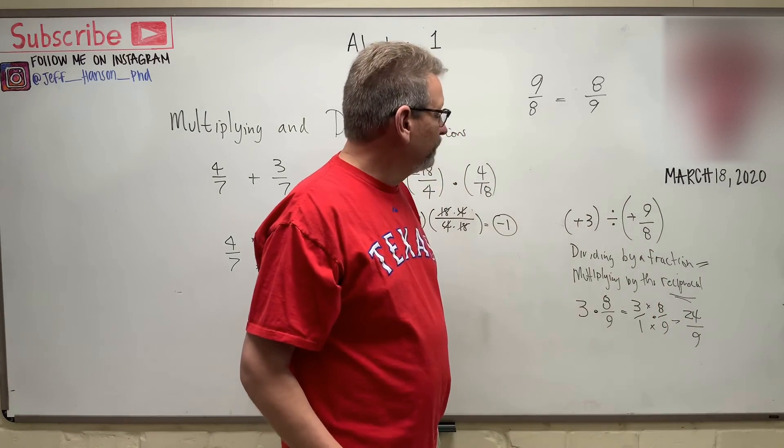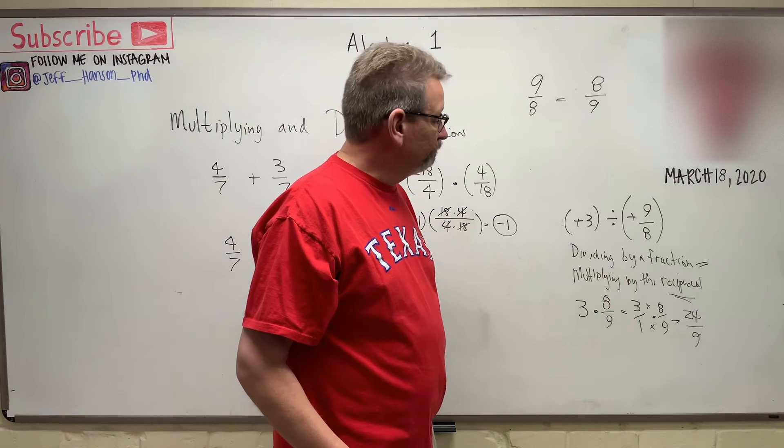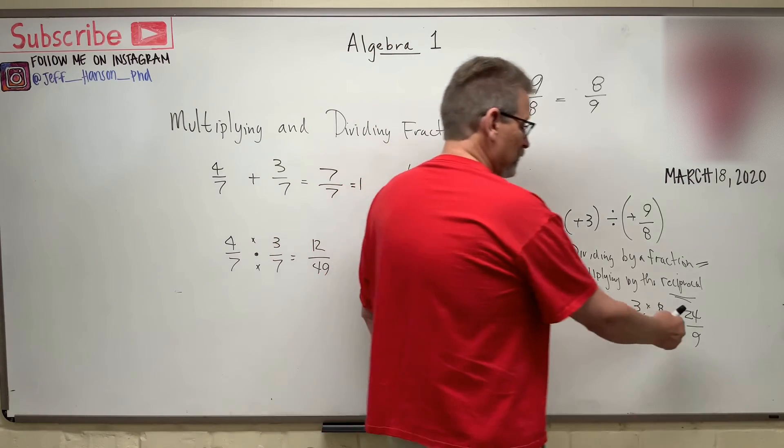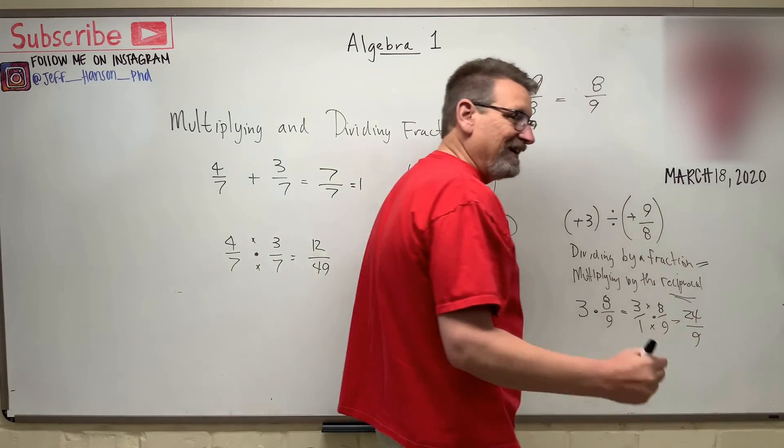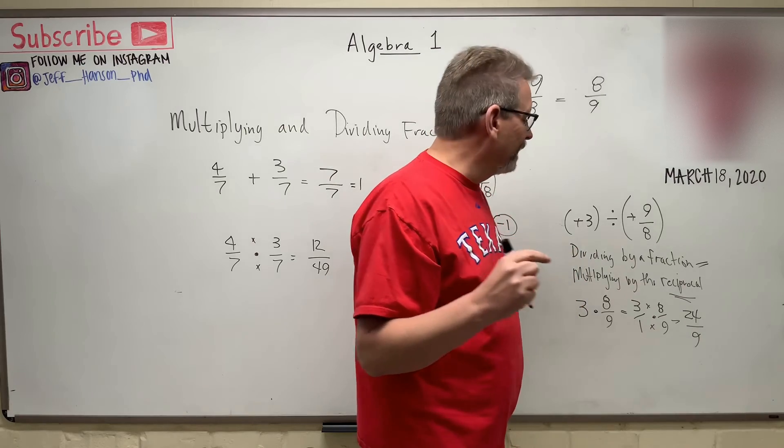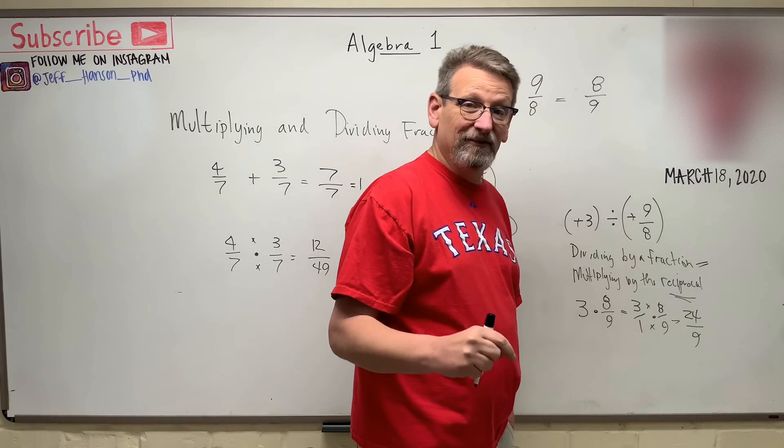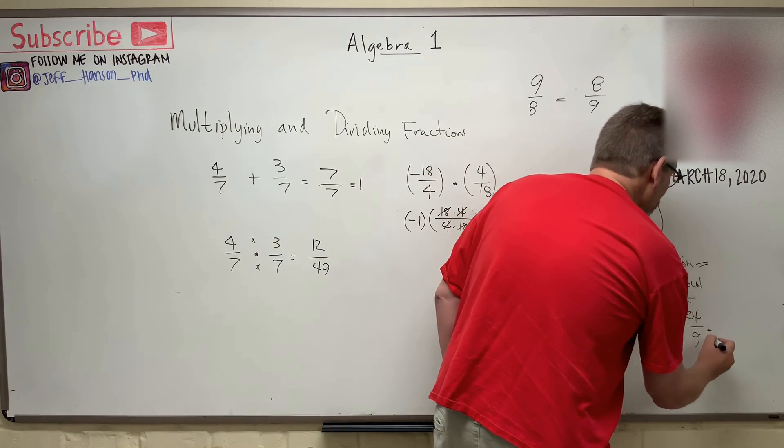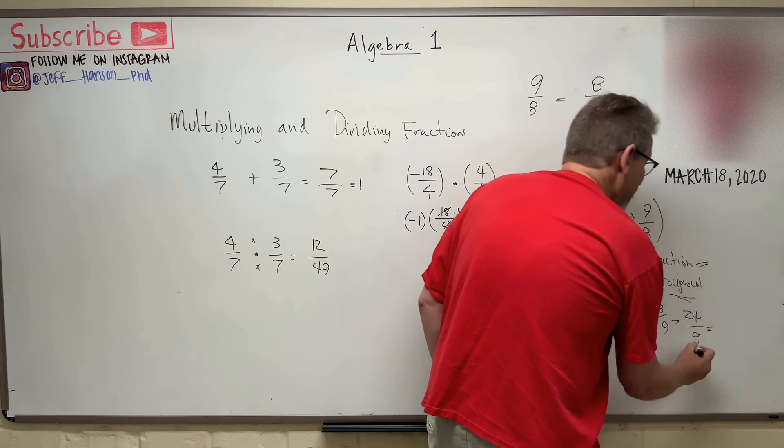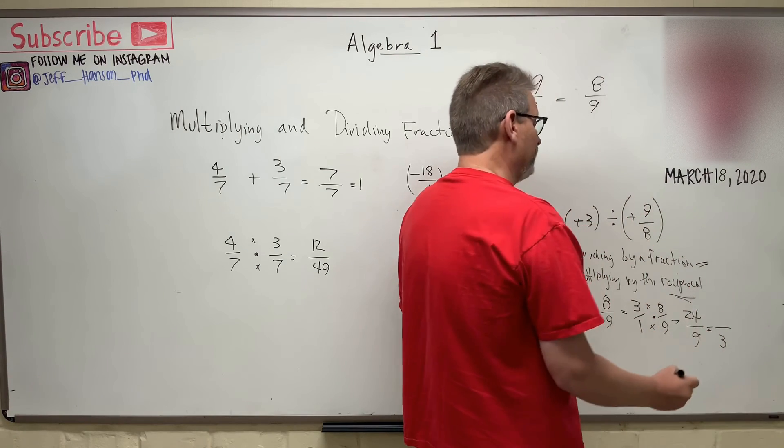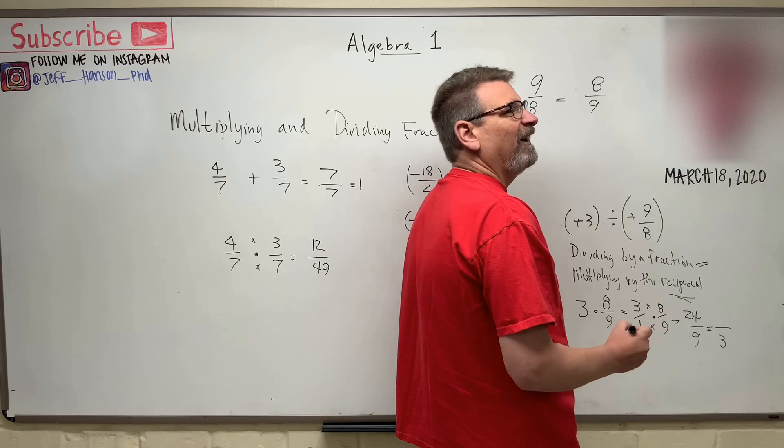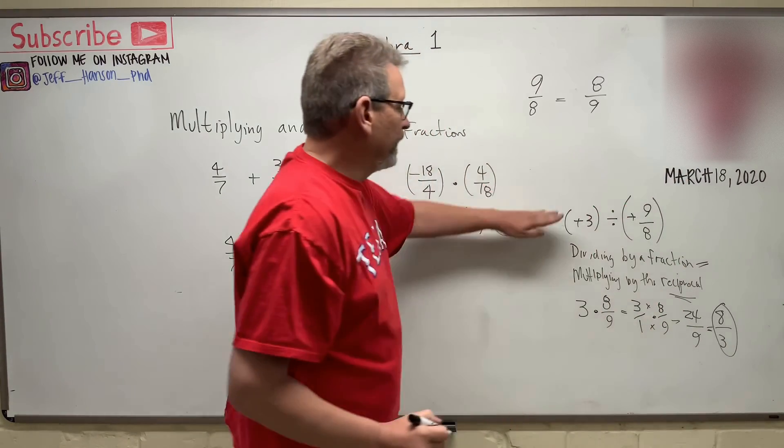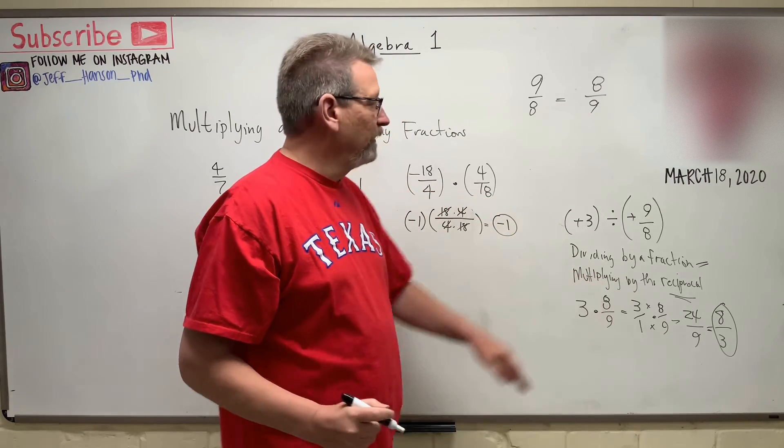Will that reduce? Let's see. And here's a trick. Remember, if you take any number like 24, if you add the two numbers together, and that gives you a number that's divisible by, like, 3? So 2 plus 4 is 6. Is 6 divisible by 3? Yeah. So then divide each one of those by 3. Well, 9 divided by 3 is 3. And 24 divided by 3 is, let's see, 8, isn't it? And so, that equates to a positive 8 thirds, doesn't it?